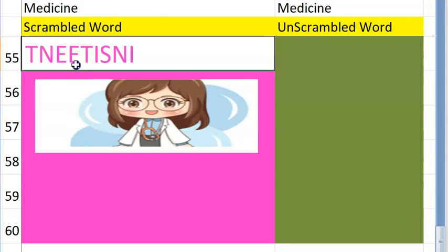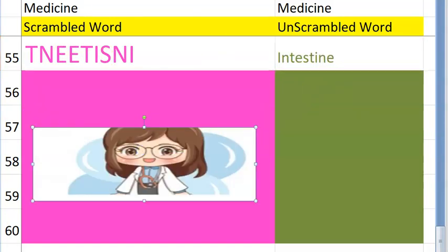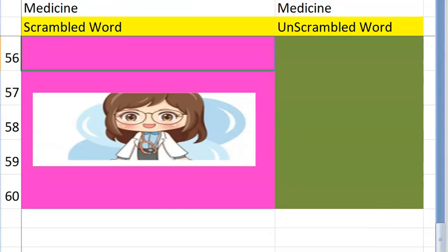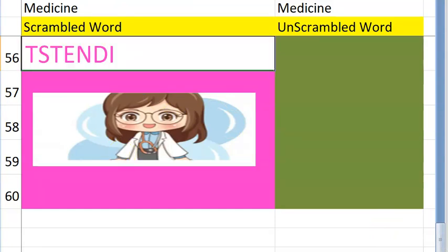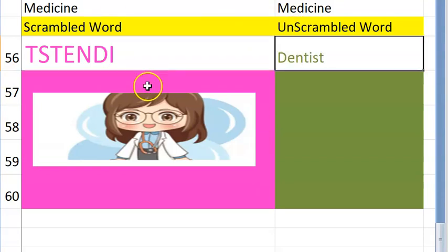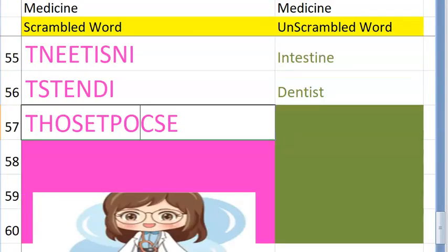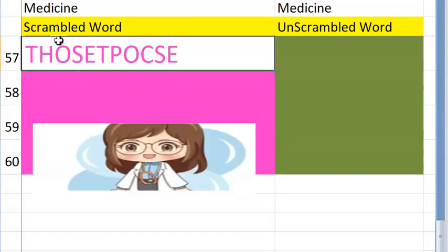The fifty-fifth one starts with I — it's not Einstein — something after your stomach — intestine. Very good! The fifty-sixth one starts with D — it's yet another branch of medicine, something to do with your teeth — dentist. Very good!